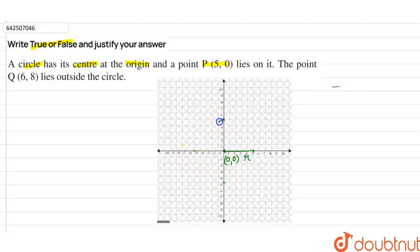So from there we can join a circle, we can form a circle. So this is a circle with origin (0,0) and a point on circle (5,0). Now we have to check whether the point (6,8) lies outside the circle or not.